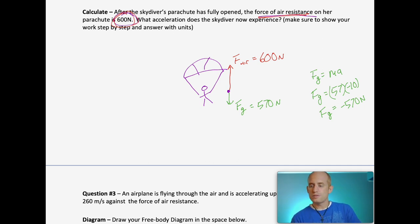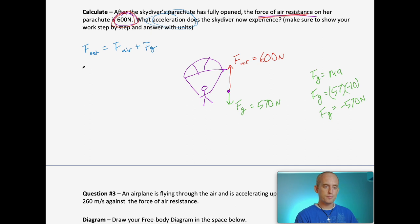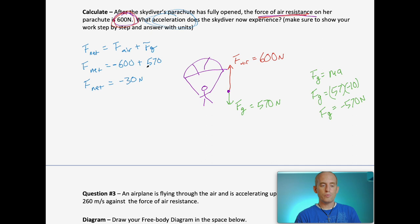Now we figure out net force. F-net equals the sum of all forces: force of air resistance plus force of gravity. We're going downward, so air resistance gets the negative sign as it's the resisting force. So F-net equals 570 plus negative 600, which gives us negative 30 newtons. That's our net force — now we can solve for acceleration.